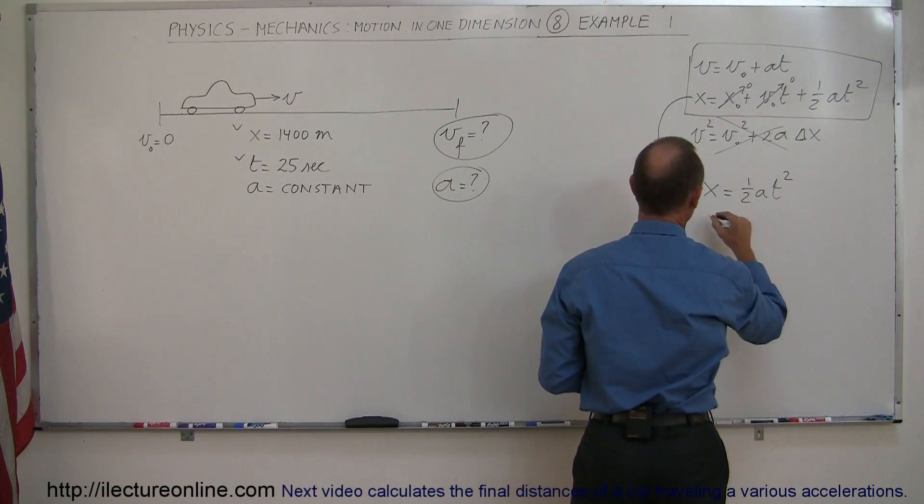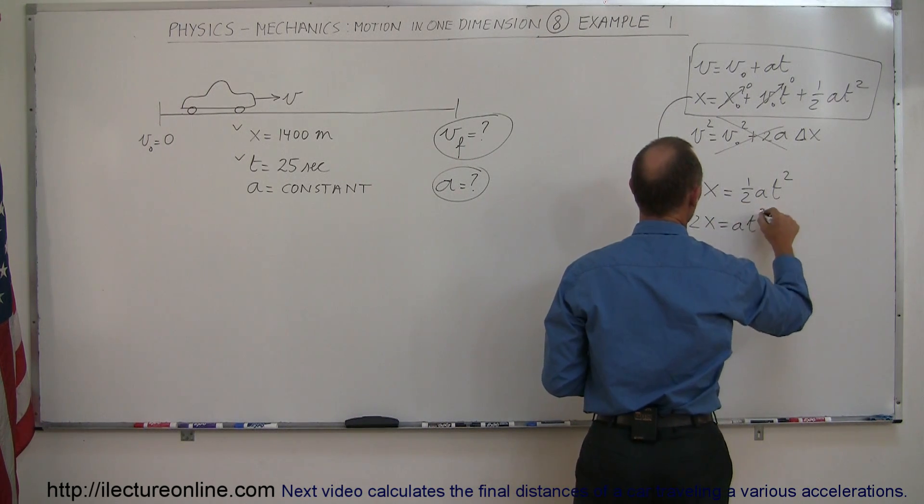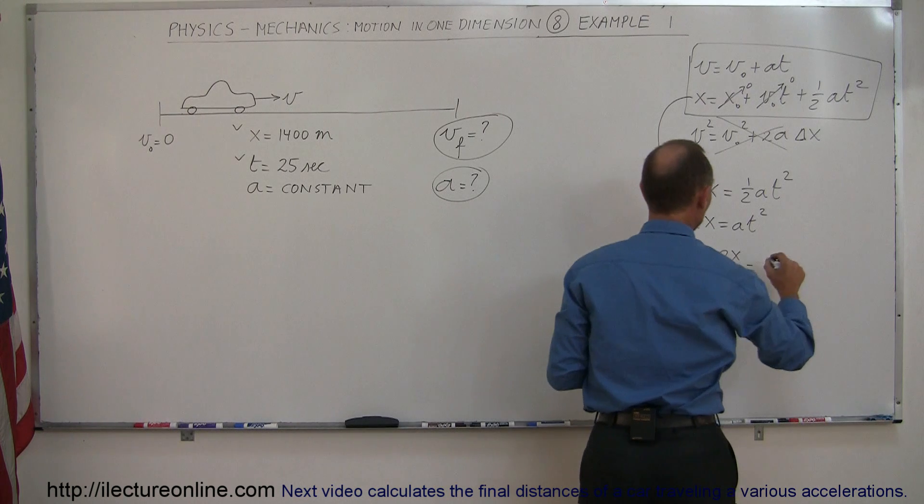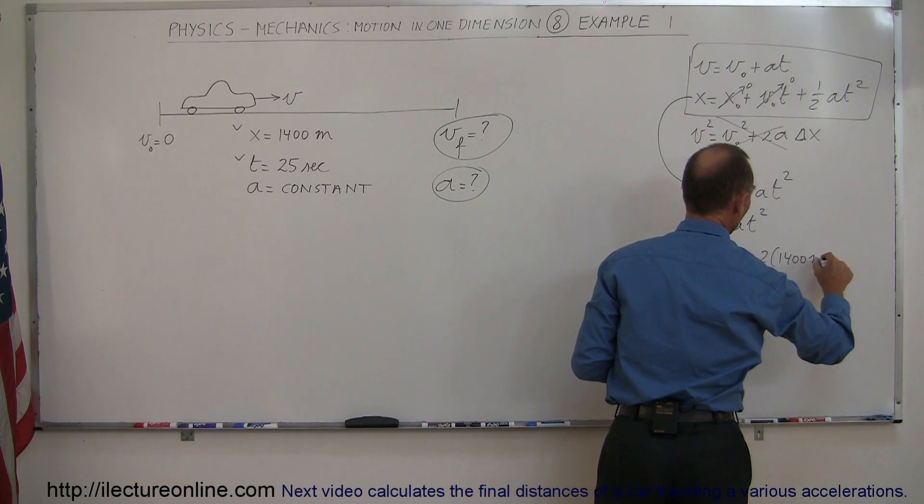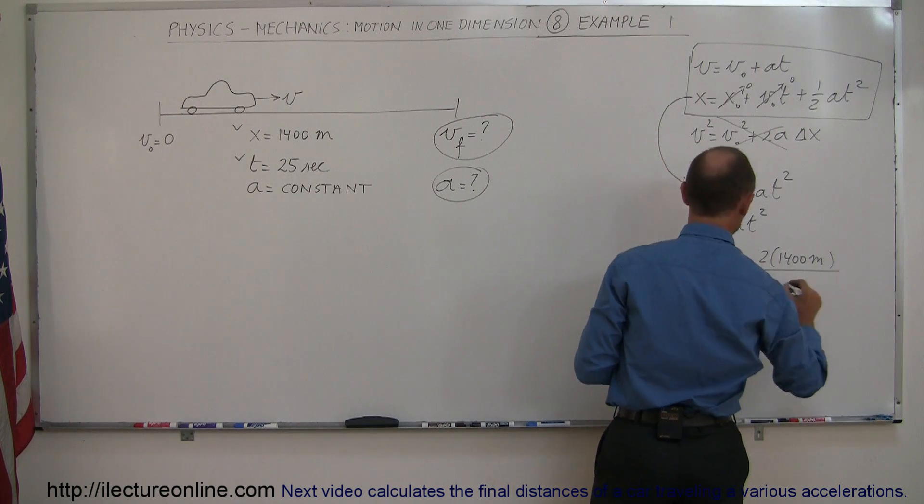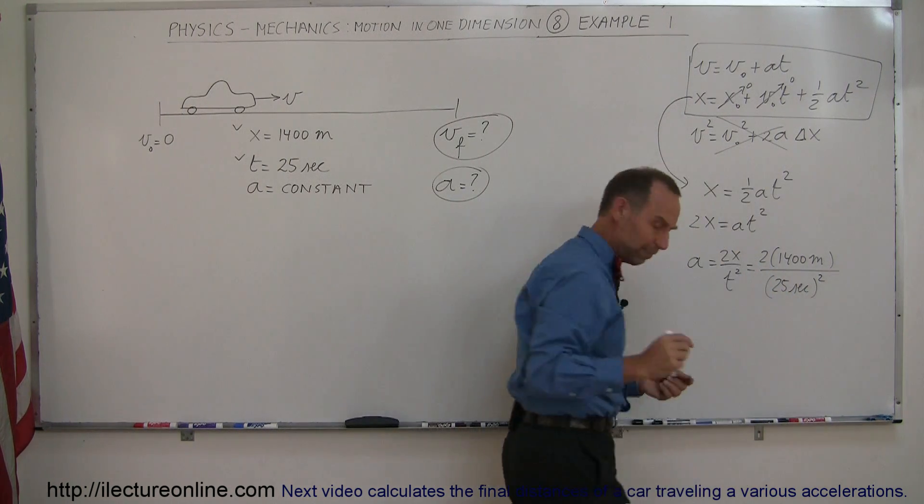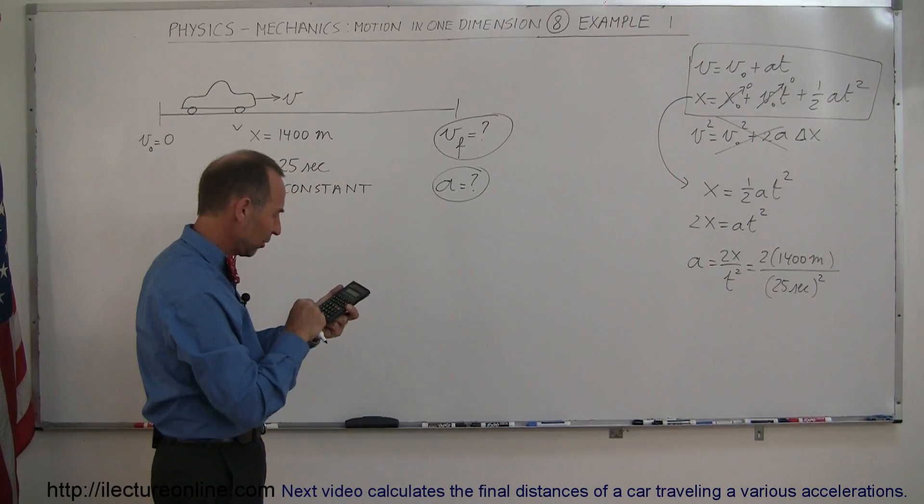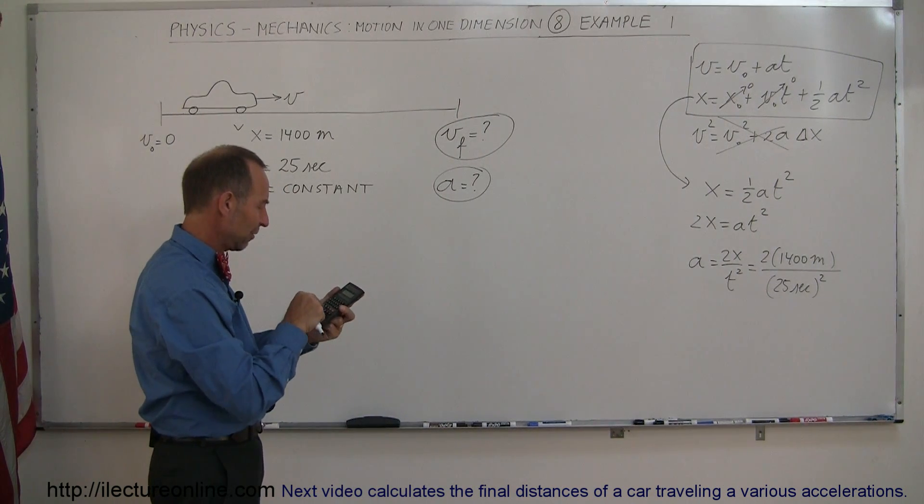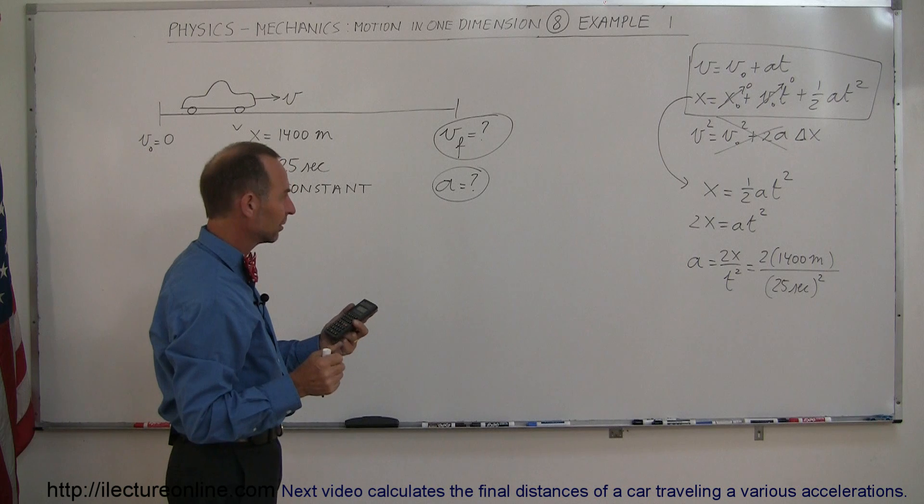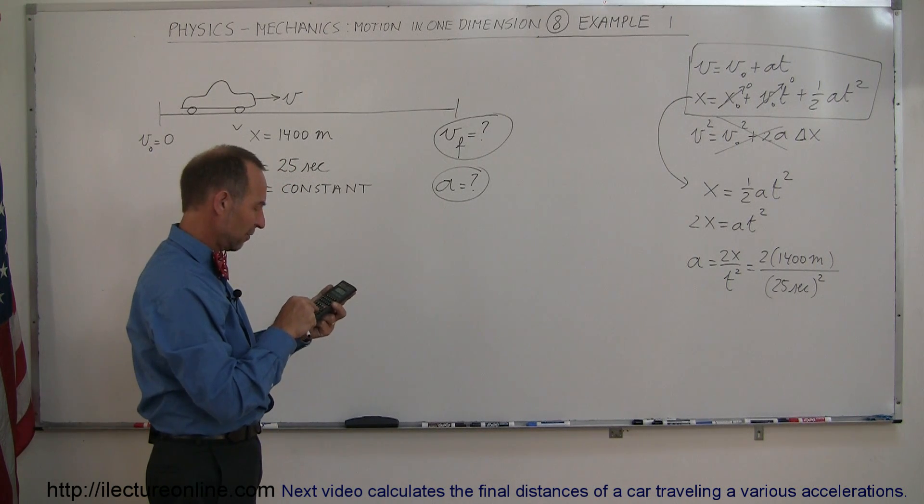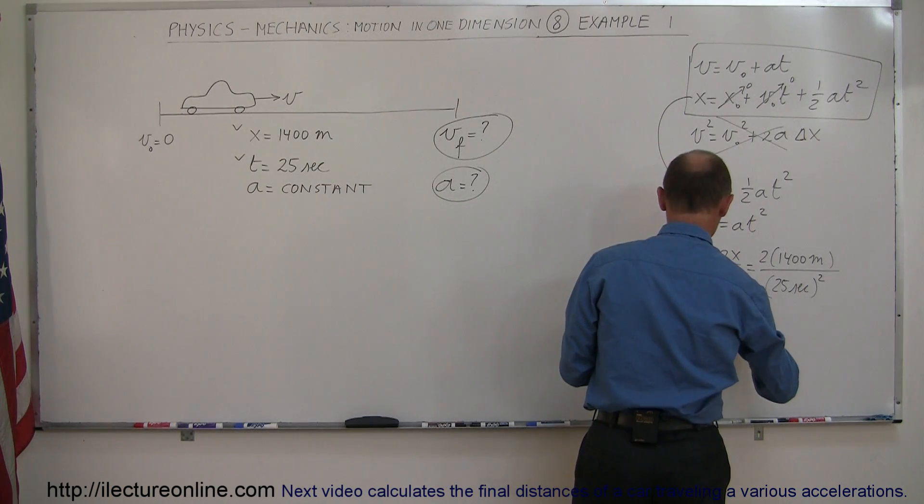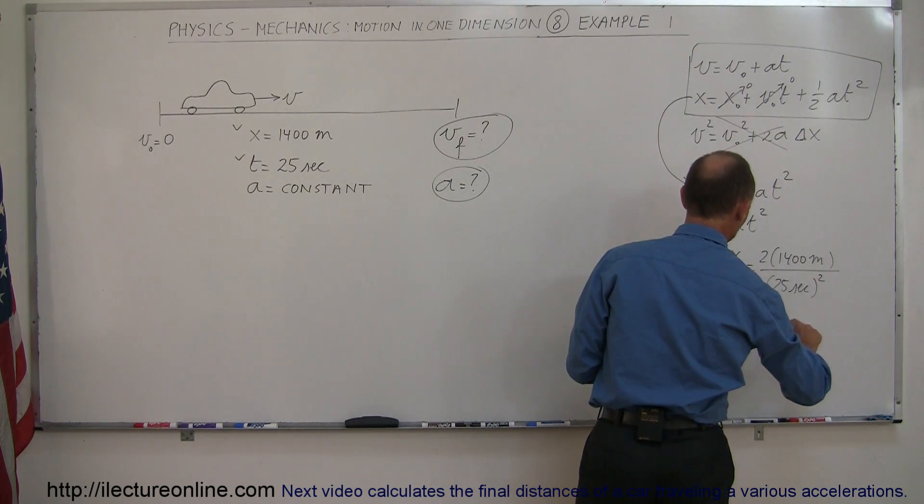So first I'm going to solve this for A, so we have 2X equals AT squared, or A is equal to 2X divided by T squared. In this case, it's 2 times 1400 meters divided by the time, which is 25 seconds squared. Now I need to find my calculator. Never have your calculator too far away, so that's 2800 divided by 25 squared equals. So the acceleration is equal to 4.48 meters per second squared.